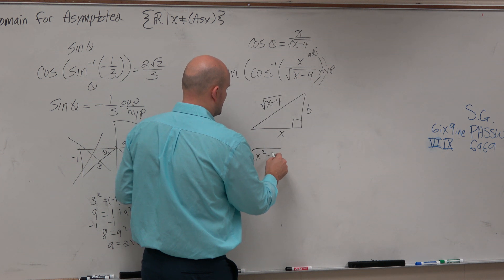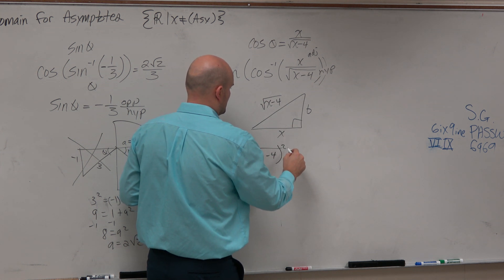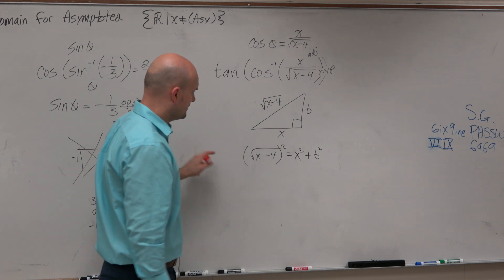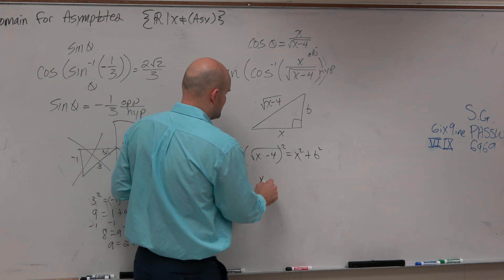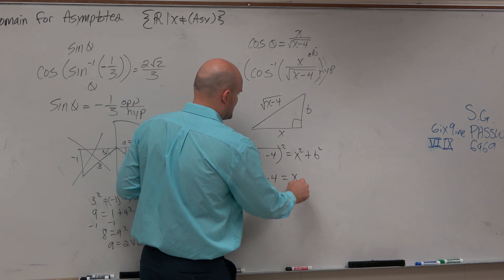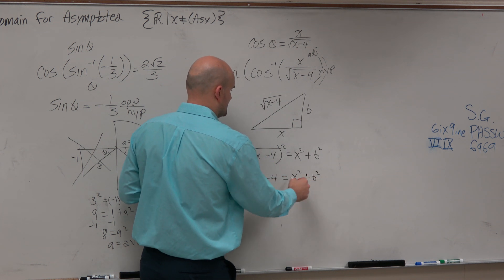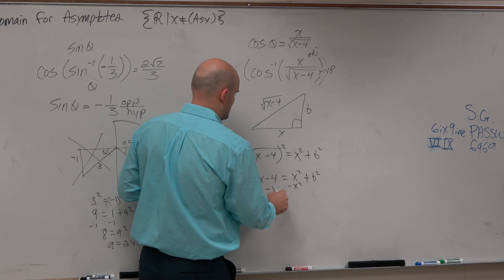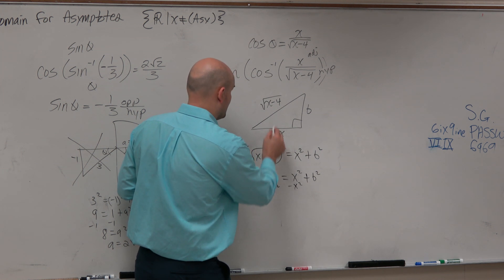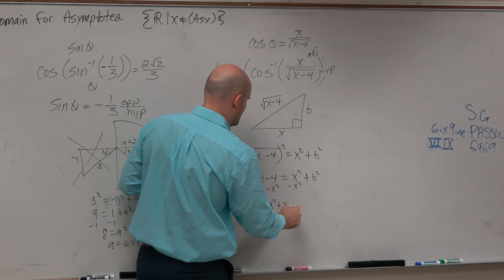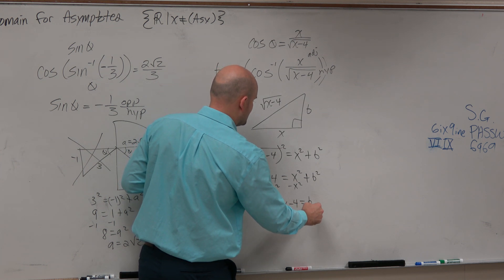So I'd say x squared minus 4, sorry, square root of x minus 4 squared is equal to x squared plus b squared. Well, that just gives you x minus 4 equals x squared plus b squared. Subtract the x squared. And that was supposed to be an x squared. So I have negative x squared plus x minus 4 is equal to b squared.